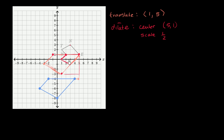And now it looks pretty clear — we just have to do a reflection around this line. We just have to do a reflection around the line y equals 1. Reflect around the line y is equal to 1.